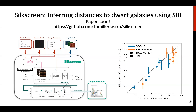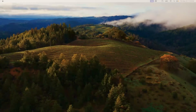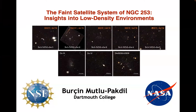Very interesting talk. Do you have enough data yet to say whether your method produces better or worse results, depending on whether it's the tip of the red giant branch or the surface brightness fluctuation in the literature estimates? Could that give you some hint whether there's a problem with either of those methods?